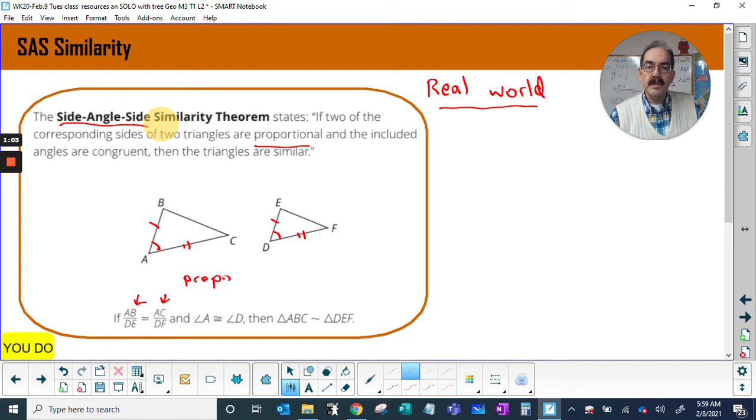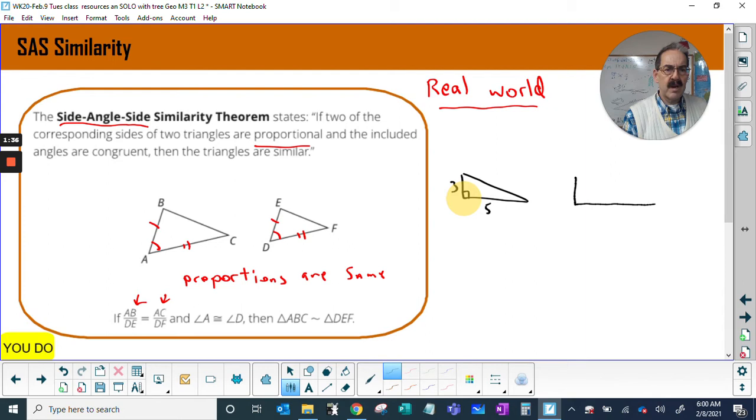Now I've been doing the 3-4-5, the famous 90 degree triangle, so let's draw that again. I have 3, 4, 5, but now I'm gonna make it four times bigger—12, 16, 20.